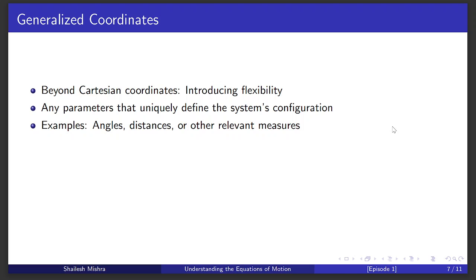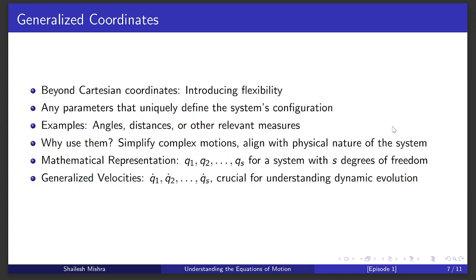Here's where the cool twist of generalized coordinates comes into play. These are special numbers, denoted as q₁, q₂, till qₛ, and they are chosen specifically to make our analysis of a problem easier and more intuitive. For instance, in the case of a swinging pendulum, instead of using x and y, we can use the angle of swing as a single generalized coordinate.